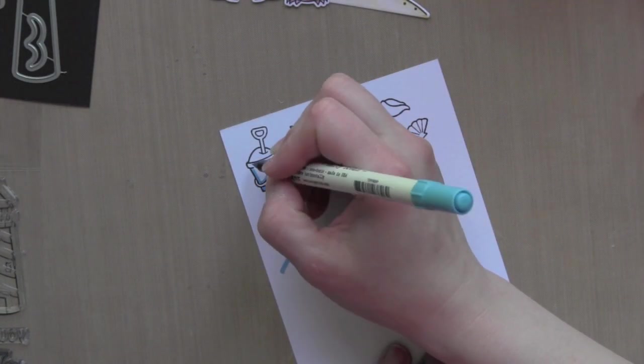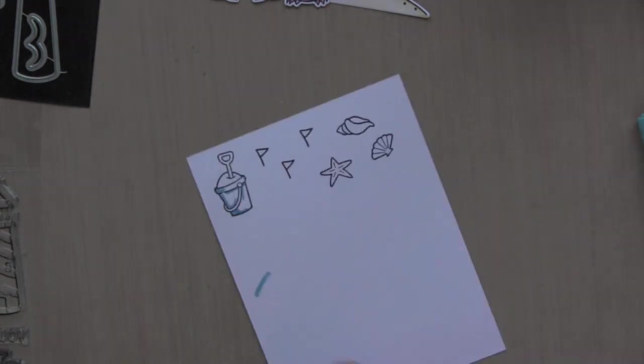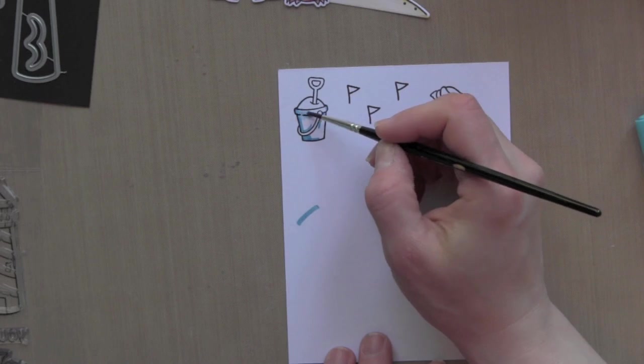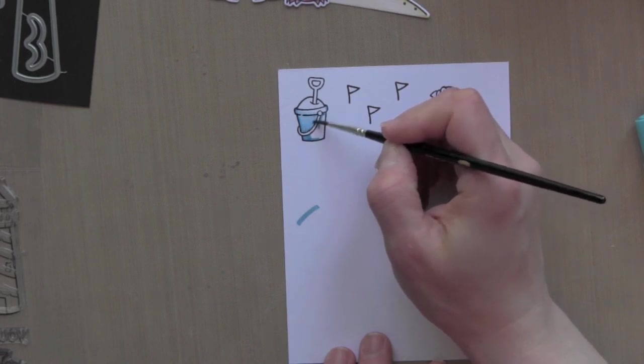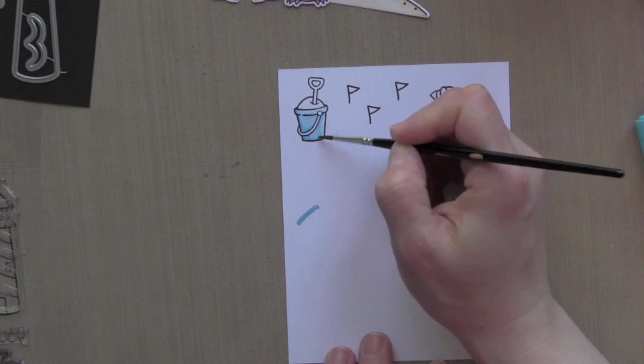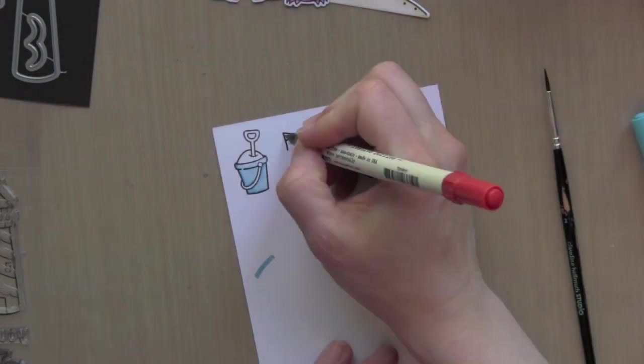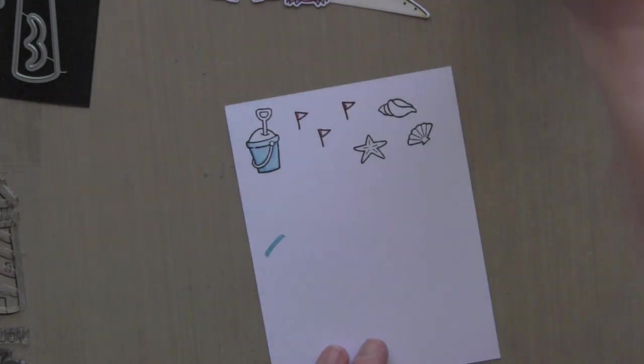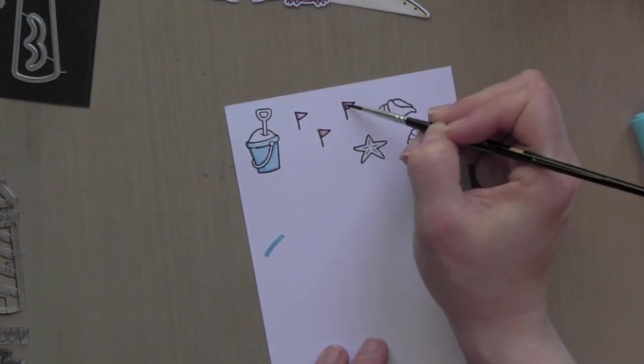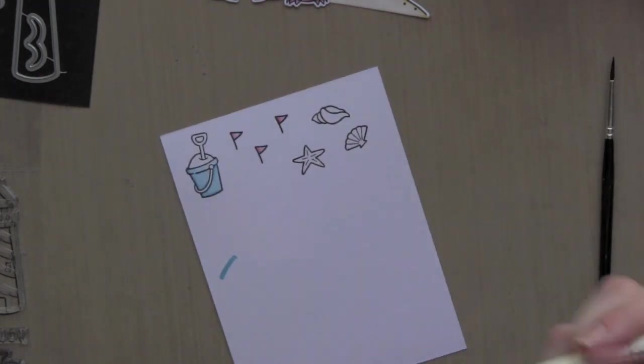I am stamping the images with black dye ink on the smooth side and then coloring in a little bit with some distress markers. I use the tumbled glass distress marker here and then I'm dipping a paint brush in some water. This is a very fine tip paint brush and just spreading that ink around from the distress marker. You can see that it watercolors really nicely.